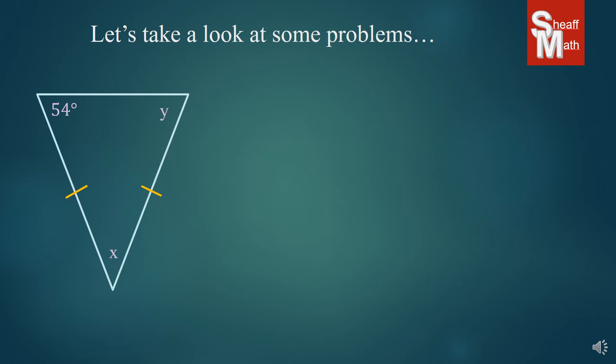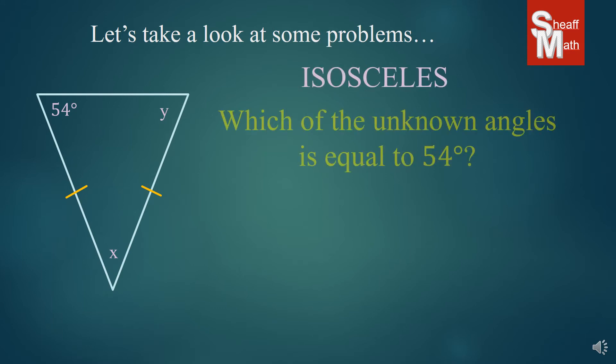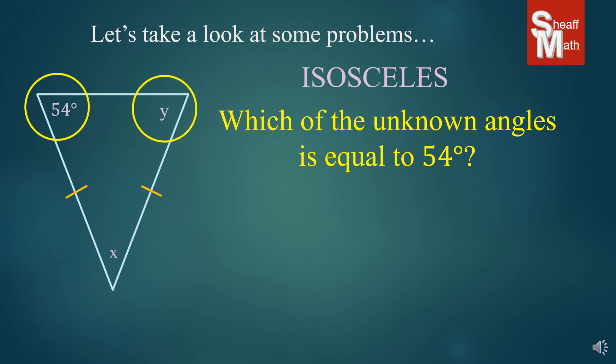What about this one? This is an isosceles triangle, and which of the unknown angles is equal to 54°? We're looking at either Y or X. Well, our two legs go down to the base angles — it's kind of an upside-down triangle — and they're right here. So Y is the one that is equal to 54 degrees, not X.